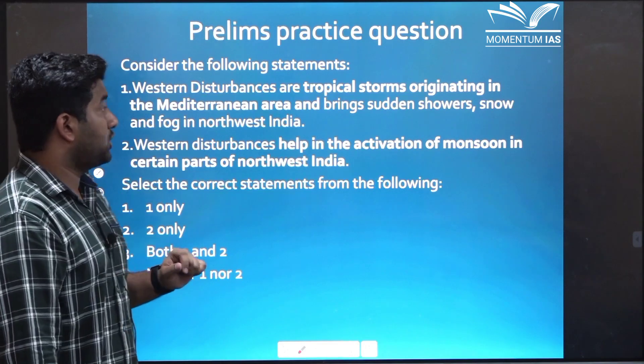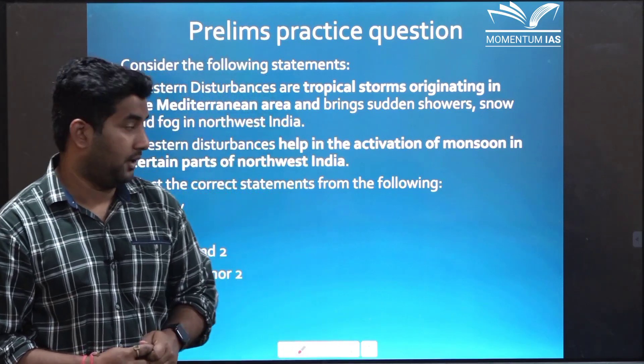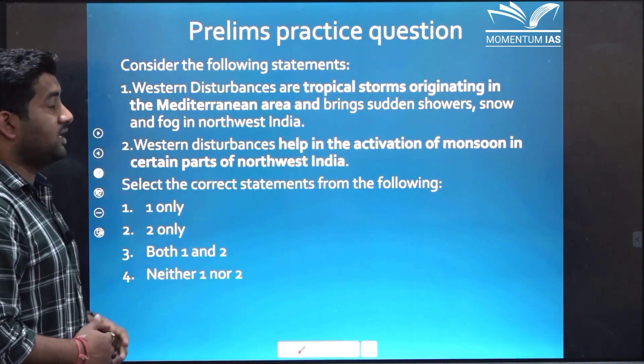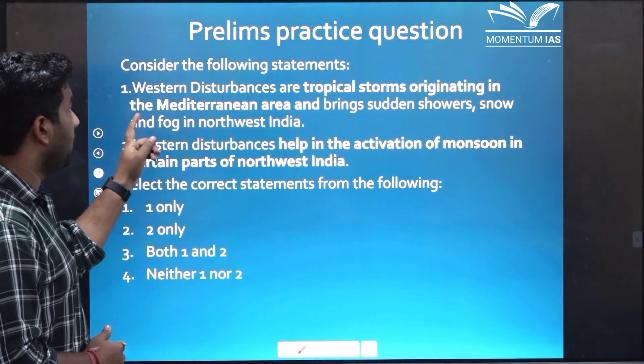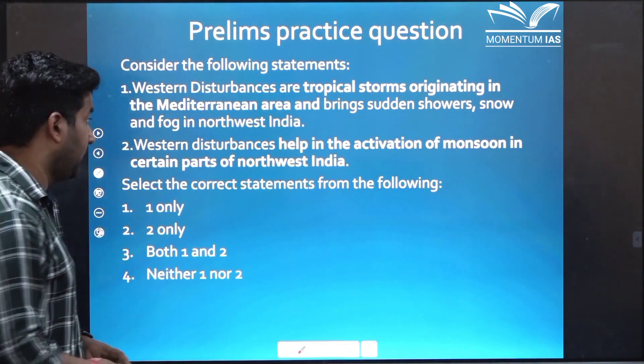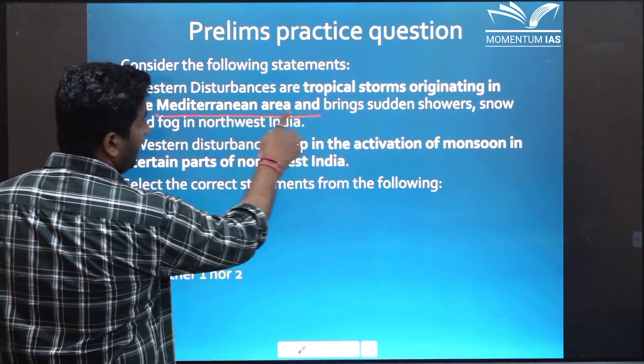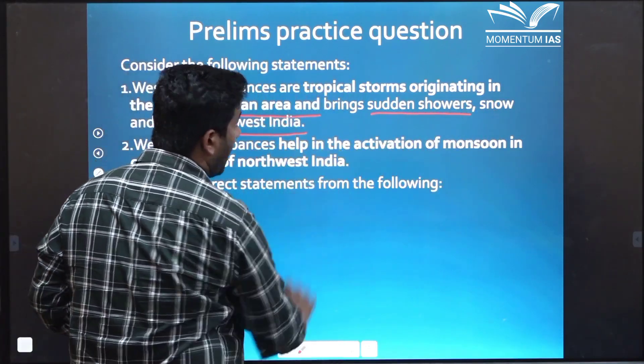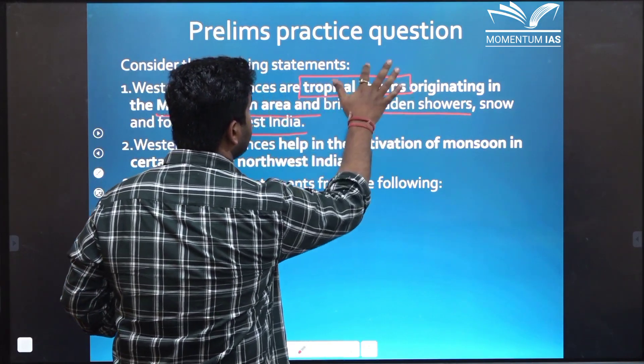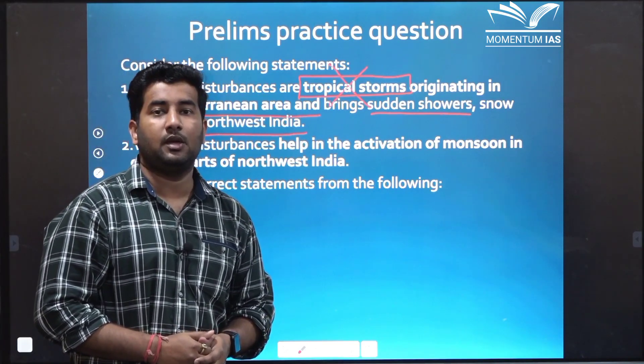So that's it about the western disturbances. Now I want to discuss two questions. One from prelims perspective and one from mains perspective. Let's see this question. Consider the following statements. Western disturbances are tropical storms originating in the Mediterranean area bring sudden showers, snow and fog in the northwestern India. Now if you look towards the second part, we would be tempting to correct this statement. Mediterranean area brings sudden showers to the northwestern India. However, the key term here is tropical storm. This is not correct. These are extra tropical storms that originate in the mid latitude region. That means this statement is not correct.